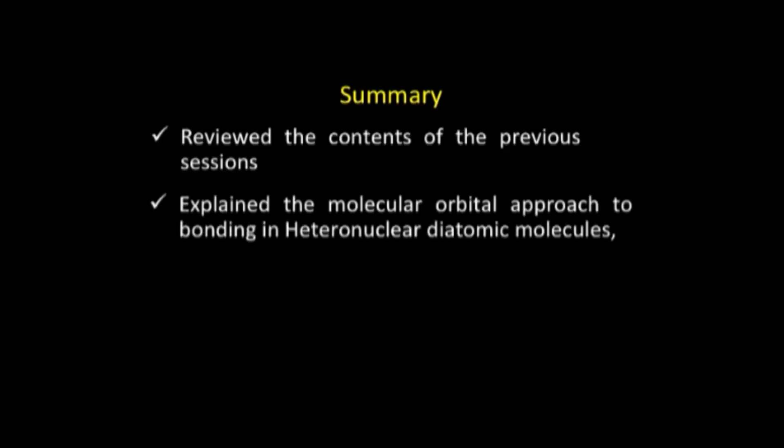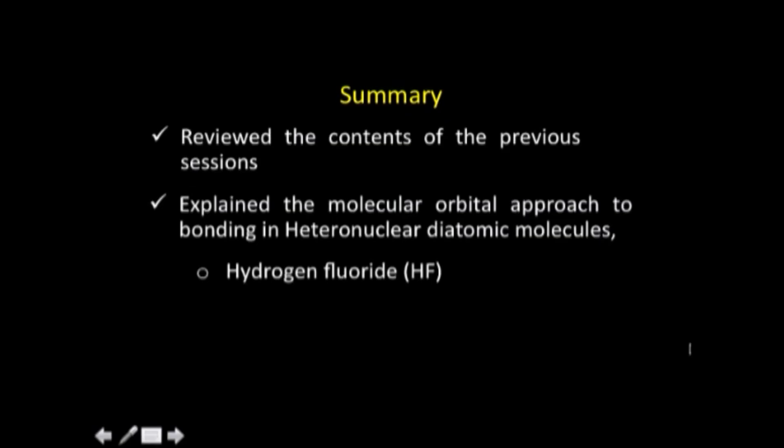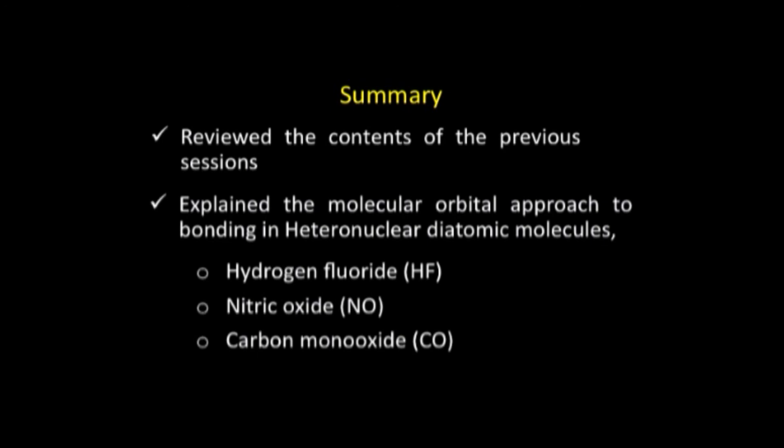It is time to sum up what we have done today. We started by briefly reviewing the contents of the previous sessions. Then we explained the molecular orbital approach to bonding in heteronuclear diatomic molecules, contrasting it with the homonuclear case and highlighting all the differences. We took up three molecules: hydrogen fluoride, nitric oxide, and carbon monoxide — discussing what atomic orbitals are present, which combinations are allowed, the molecular orbital energy level diagram, the molecular orbital configuration, and the bond order for each. With this we conclude our discussion on molecular orbital theory. In the next session we will move on to metallic bonding — what kind of bonding exists in metals. Thank you.